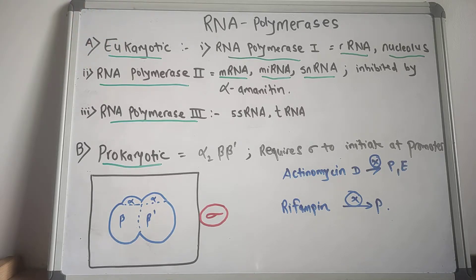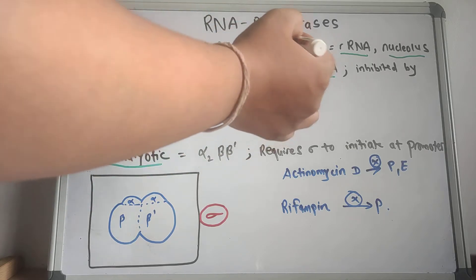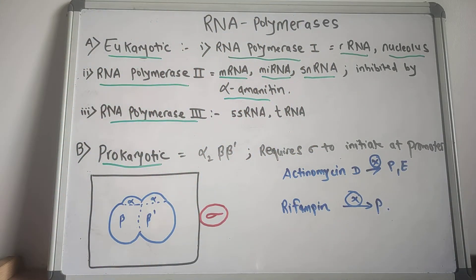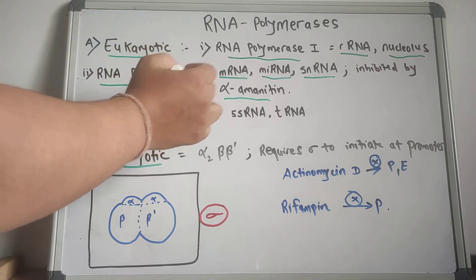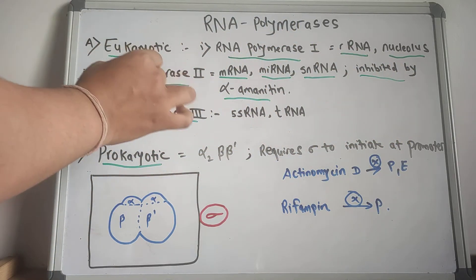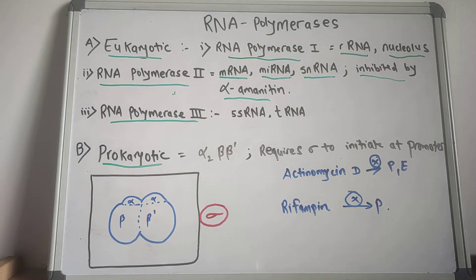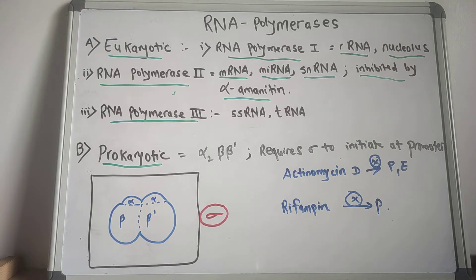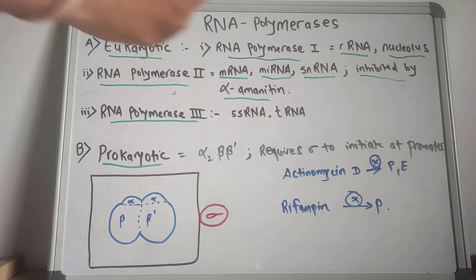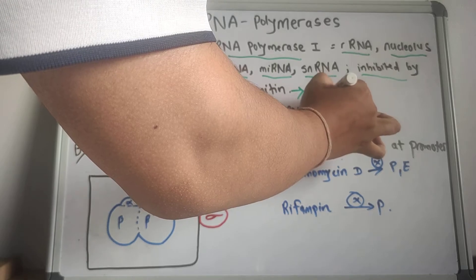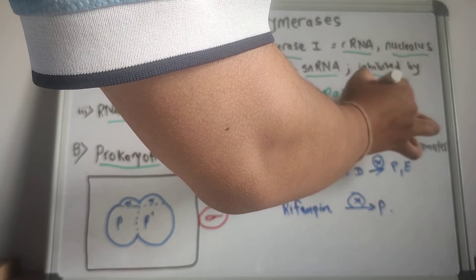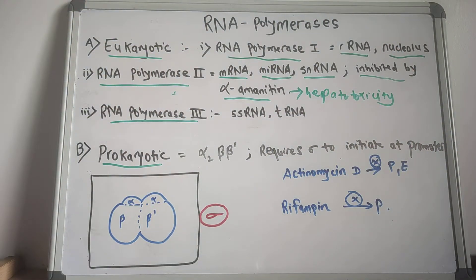One important concept to know: alpha-amanitin, found in Amanita phalloides — also known as the death cap mushroom — inhibits RNA polymerase 2. This alpha-amanitin inhibits RNA polymerase 2 and causes severe hepatotoxicity if ingested.